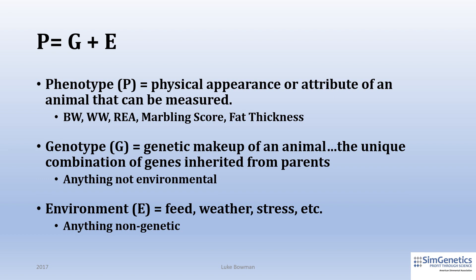It is important to understand the simple equation: P equals G plus E, or phenotype equals genotype plus environment. A phenotype, although often assumed as the visual appraisal of an animal, is actually any trait that can be measured. Phenotype is influenced by two things: the genetics of an animal and the environment in which the animal is raised. Examples of phenotypes in beef cattle breeding include birth weights, weaning weights, docility score, scrotal circumference, rib eye area, marbling score, fat thickness, etc.